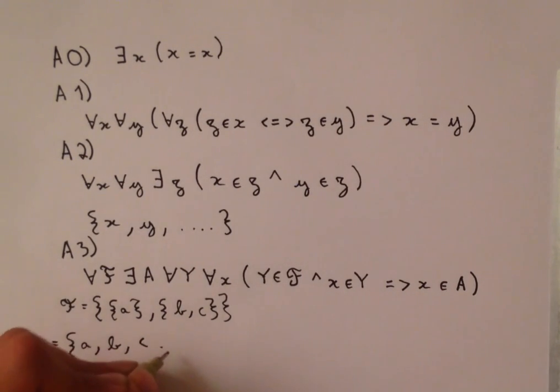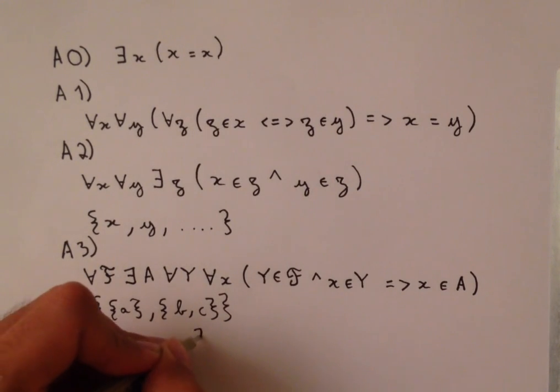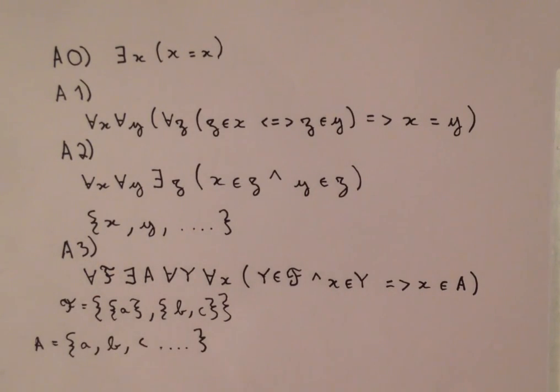And once again it might contain some other things. There's nothing here that says that it only contains these elements. All that it says is that these elements satisfying these conditions mean that they're in the set. So these ellipses are kind of annoying, but there is another axiom that's going to allow us to get rid of them.